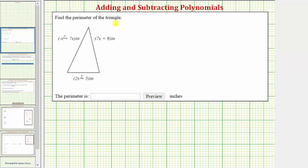We're asked to find the perimeter of the triangle. To find the perimeter of any polygon, we need to find the sum of the lengths of all the sides.